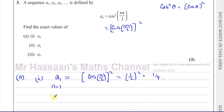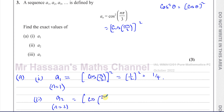The cosine of pi over 3 is the cosine of 60 degrees, which is a half, and a half squared is a quarter. For part 2, A2 is when N equals 2, so we put 2 instead of N. That gives us the cosine of 2 pi over 3, all squared. That's like 120 degrees, so that's going to be minus a half. Minus a half squared is also a quarter.